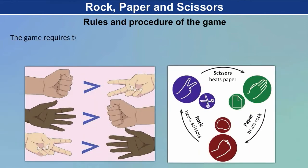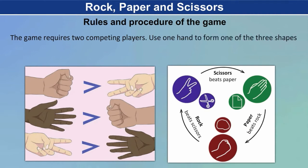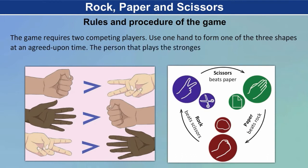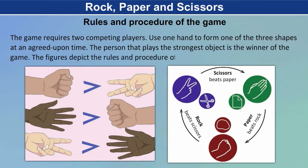Rules and Procedure of the Game. The game requires two competing players. Use one hand to form one of the three shapes at an agreed upon time. The person that plays the strongest object is the winner of the game. The figures depict the rules and procedure of the game.